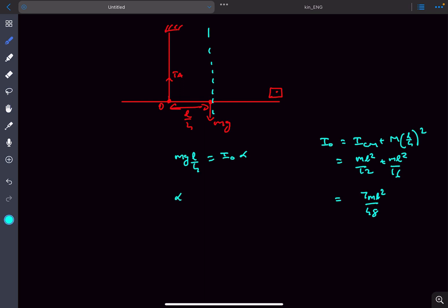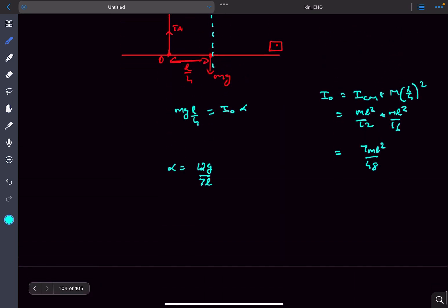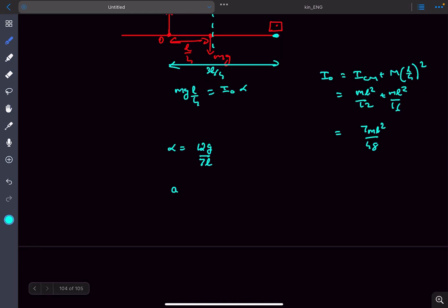On solving, alpha will come out to be 12g by 7L. If we want to find the acceleration of this point, it is at a distance of 3L by 4 from the rotation axis, so the acceleration of that point is going to be alpha multiplied by 3L by 4.